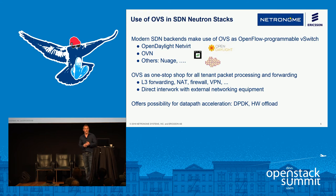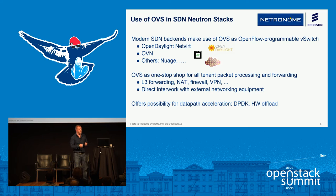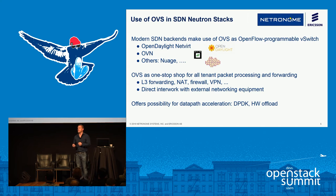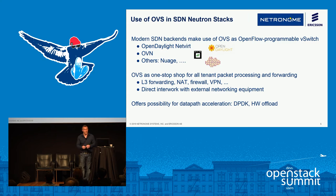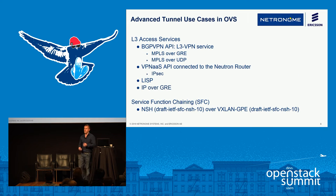OVS is a pretty critical piece of functionality to connect your VMs into your networking aspects. OVS is really becoming the place where we're going to implement all these new technologies — Layer 3 forwarding, NAT, firewalls, VPNs as a service. It really gives us a nice opportunity now to define how we're going to accelerate OVS, how we bring in these different tunneling technologies — by doing things like DPDK and hardware offloading to address the use cases that are coming up.